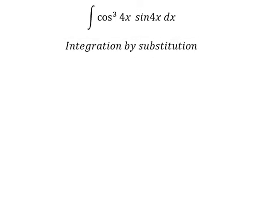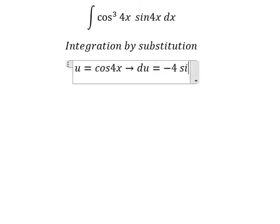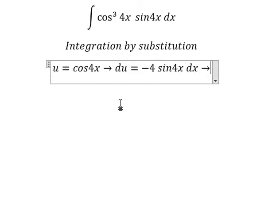So I will put u equal to cosine 4x. Then we do the first derivative for both sides and we have negative 4 sine 4x dx. Because we don't have negative 4 in here, we need to divide both sides by negative 4.